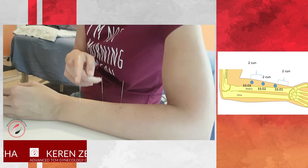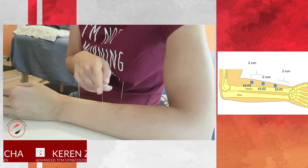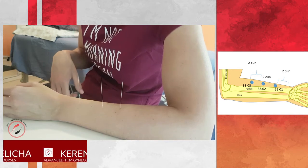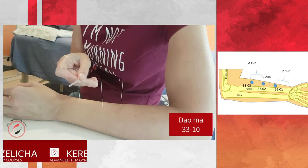Think about them when you want to harmonize the lower jiao, when you want to move qi in the lower jiao. Dalma 3310.